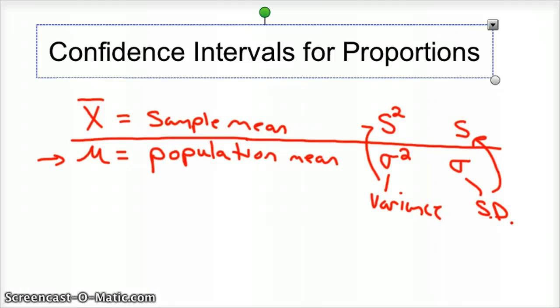Okay, so with proportions, we have a similar set, they have their own symbols. So P stands for the proportion of the population. P hat, with a little hat over it, is the sample proportion.